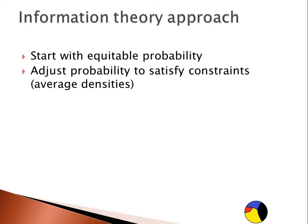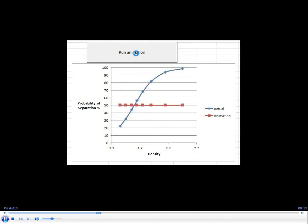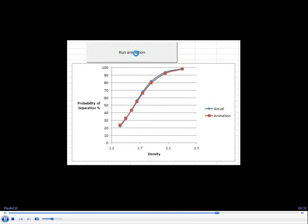Information theory is a methodology that's over 100 years old, which allows one to estimate the probability of separation but using information rather than coming up with a model in advance. It adjusts the probabilities to satisfy the constraints, and that's why it's called information theory. Here we have an animation where the algorithm fits the partition curve using information theory. Starting from an equitable separation, using the information about the average density of the products, it adjusts the separation curve until it eventually converges to the actual separation curve, or at least very close to it.